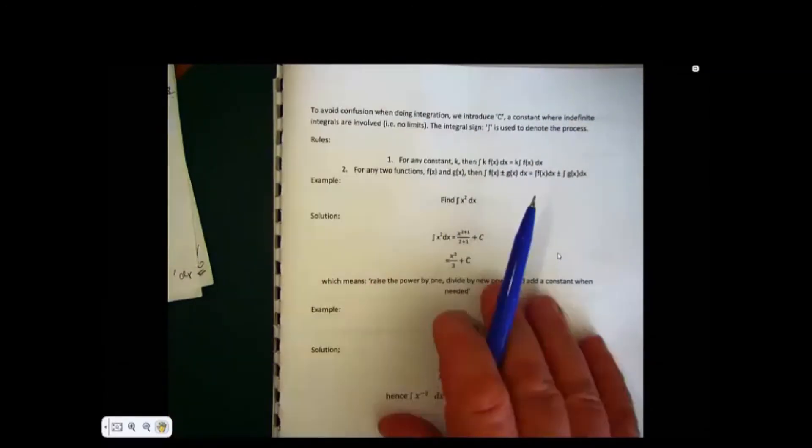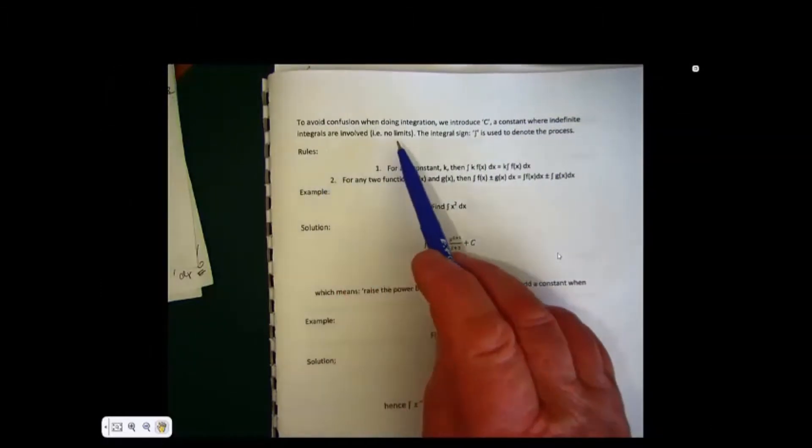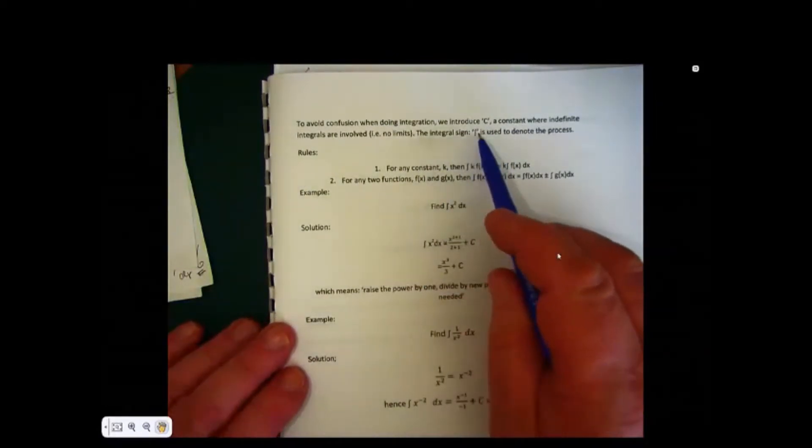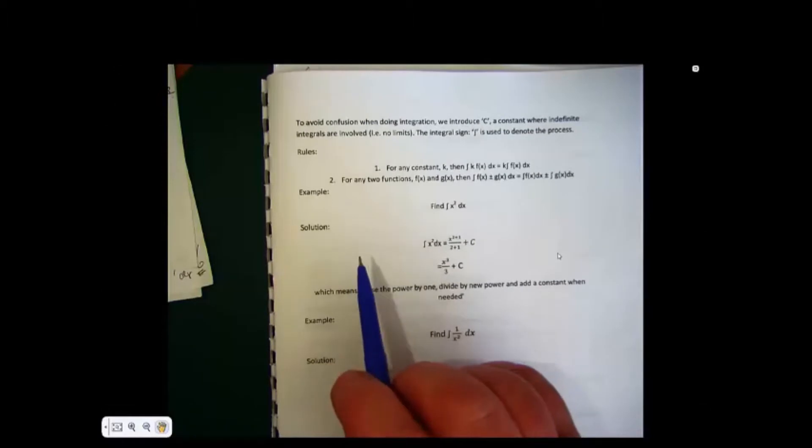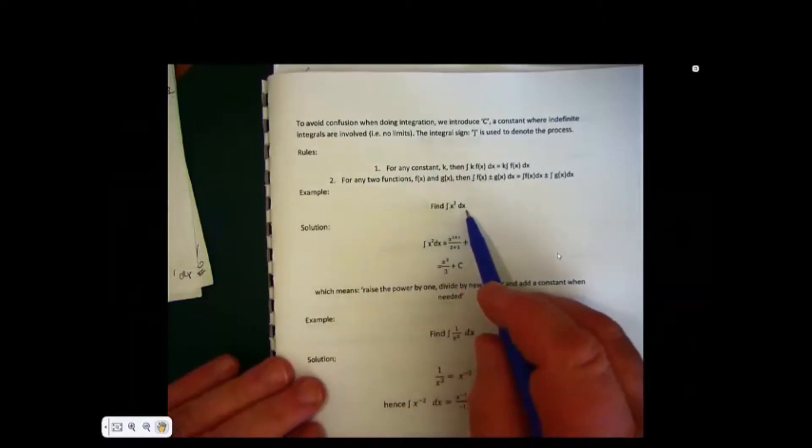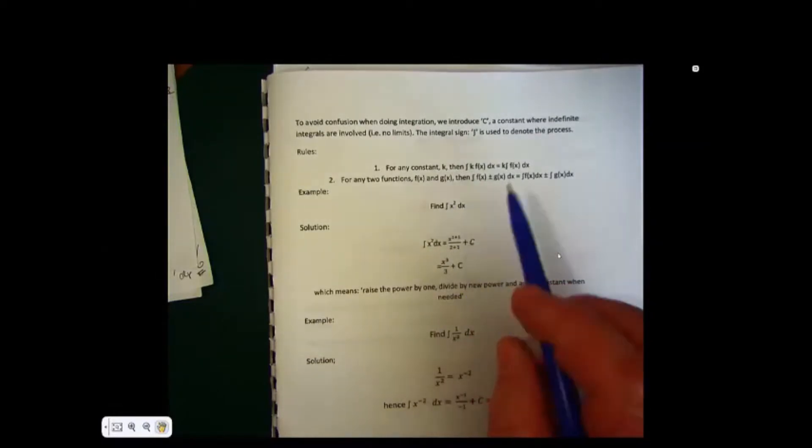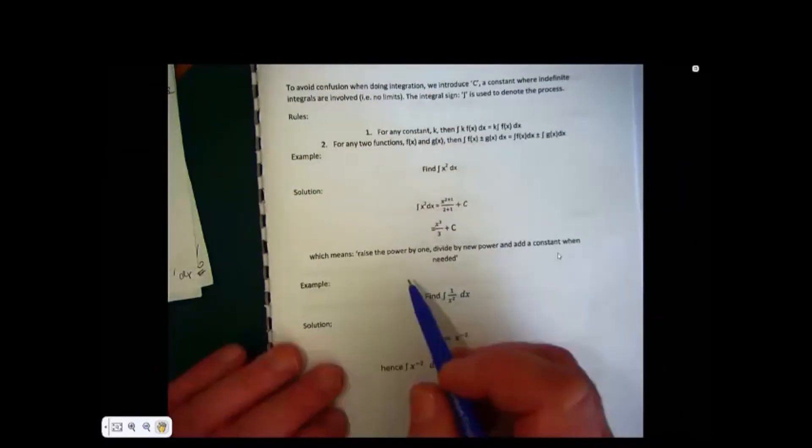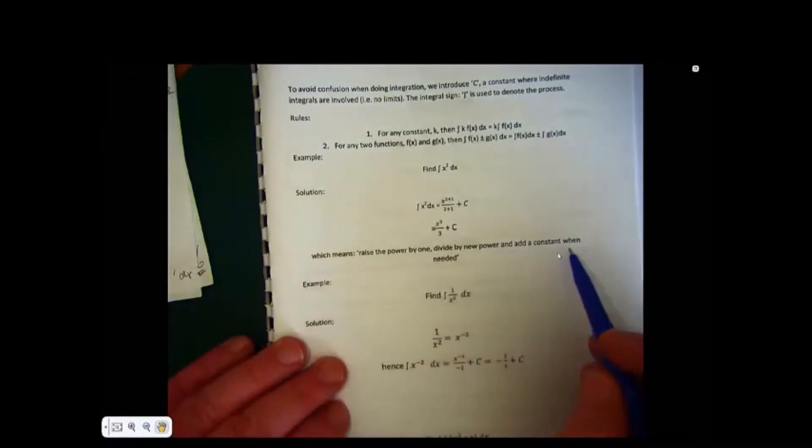To avoid confusion when doing integration, we introduce c, a constant, where indefinite integrals are involved. The integral sign, which is this sort of a curvy s, is used to denote the process. So if we have something like integrate x squared, what we do is we raise the power by 1 and divide by the new power, and then add a constant. So the definition that you need to familiarize yourself with is: raise the power by 1, divide by the new power, and add a constant when needed.